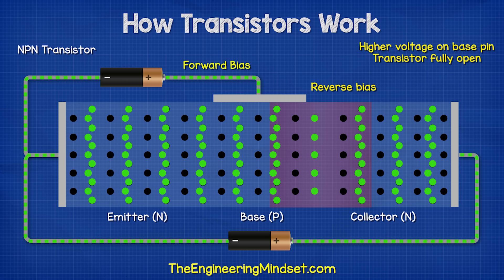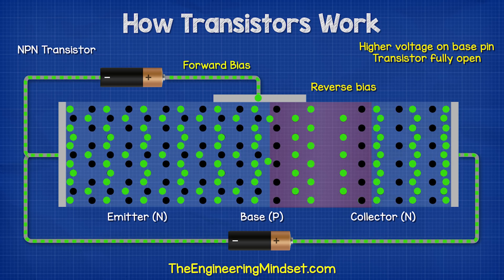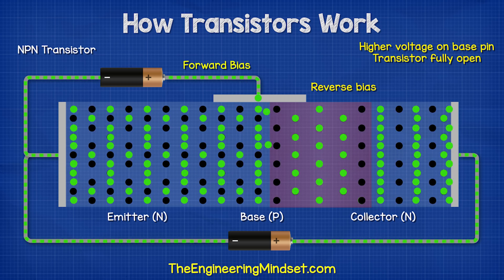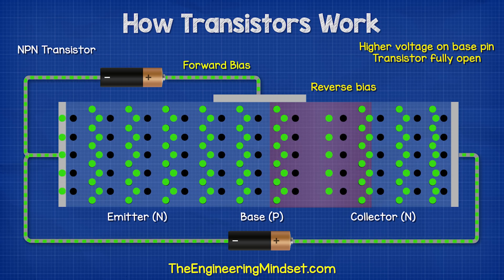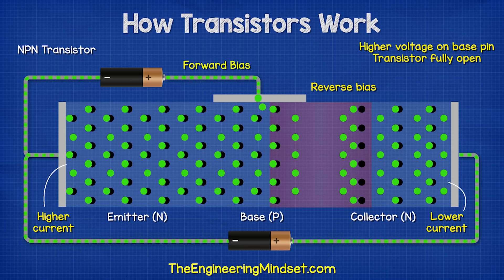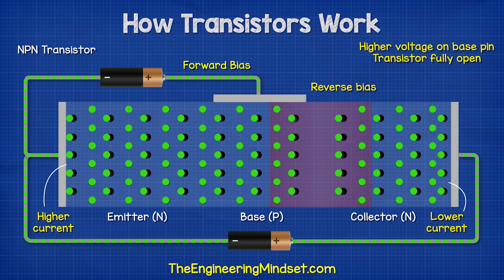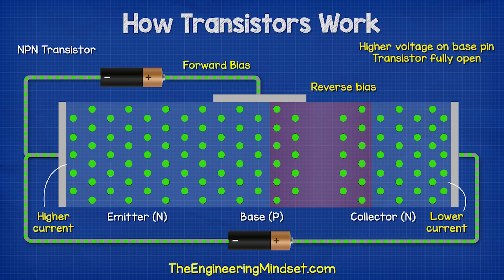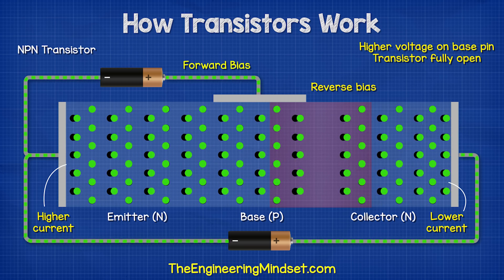A higher voltage on the base pin fully opens the transistor, which means more current and more electrons moving into the P-type layer. Therefore, more electrons are pulled across the reverse bias. We also see more electrons flowing in the emitter side of the transistor compared to the collector side.